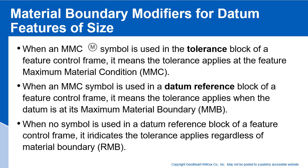That's maximum material boundary. When no symbol is used in the datum feature reference block, that indicates the tolerance applies regardless of material boundary — comparable to RFS. That's comparable to Rule 2, which says regardless of feature size applies unless otherwise specified. So the default is regardless of material boundary, in accordance with Rule 2 of GD&T.